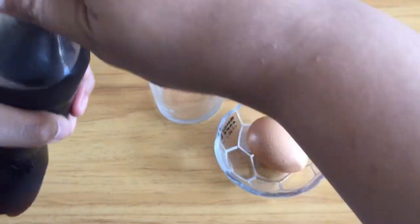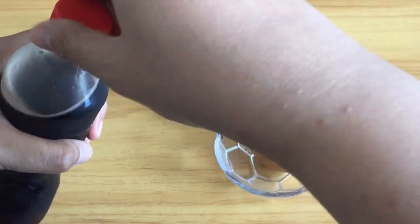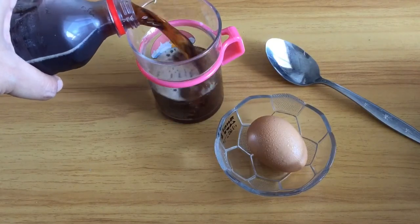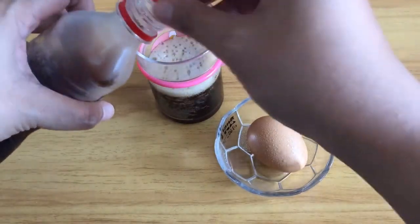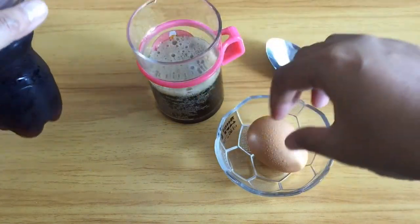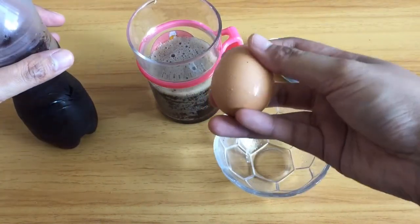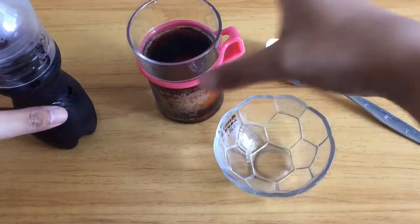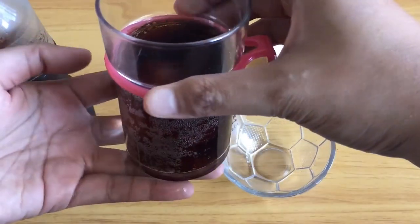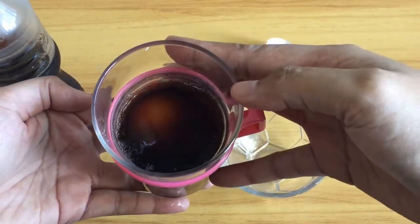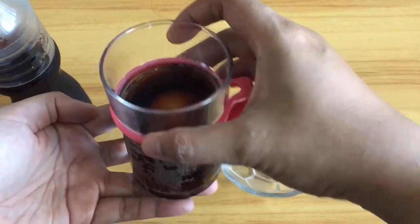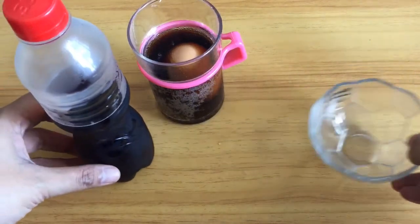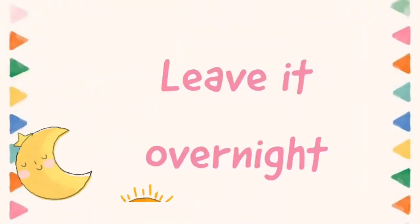First, open the Coke and let's pour it in the glass — not too much. And then take the egg and put it inside the Coke, like this. Can you see the egg inside the Coke? Good. Next, just leave it overnight.